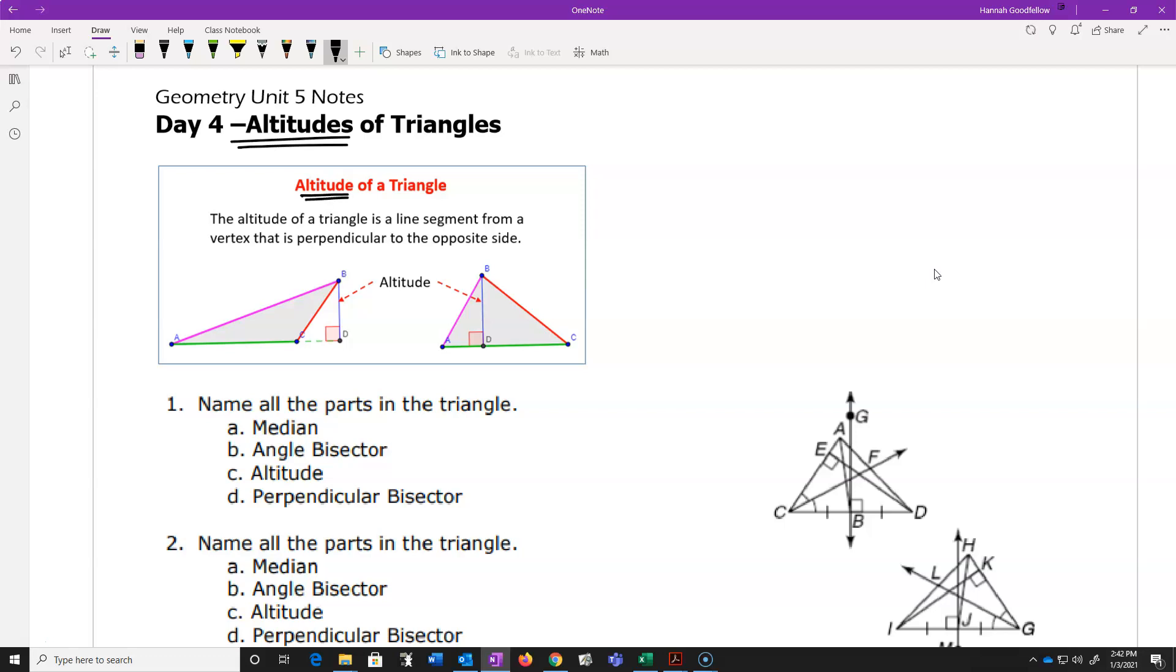Okay, now an altitude of a triangle is a line segment from the vertex. So let's keep in mind that it connects to the vertex, and it goes to the other side, the opposite side, but it makes, most importantly, a perpendicular.